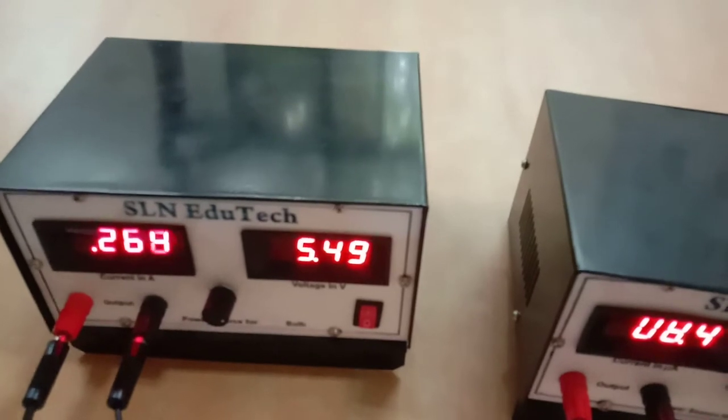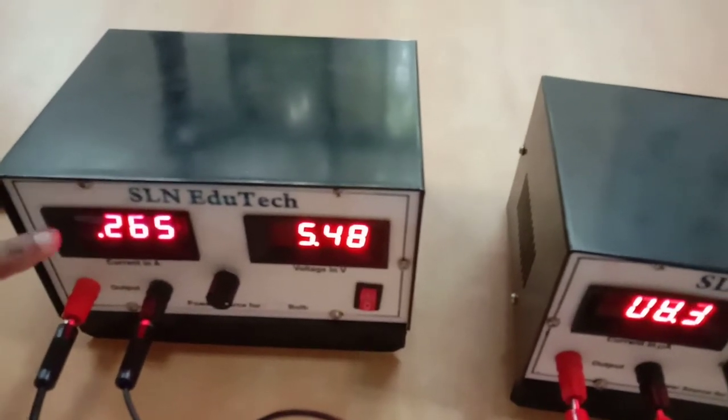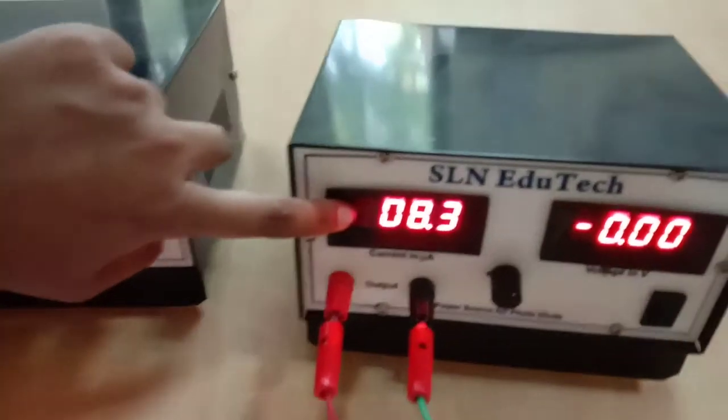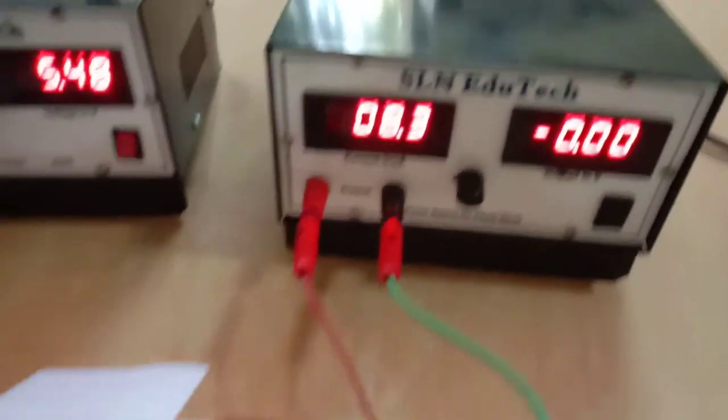Okay, 5.48 or 5.49, that's okay. Now you have here the current value as 0.265. I am writing here, then the current across the photodiode as 8.3.